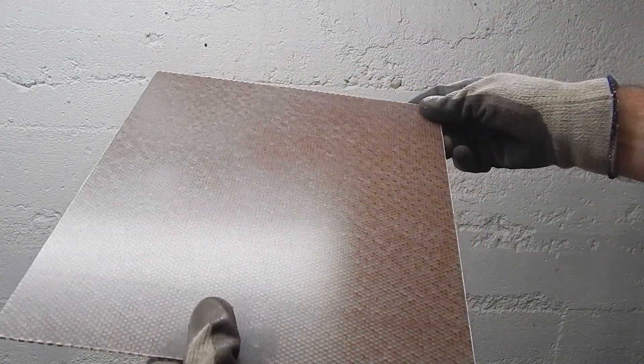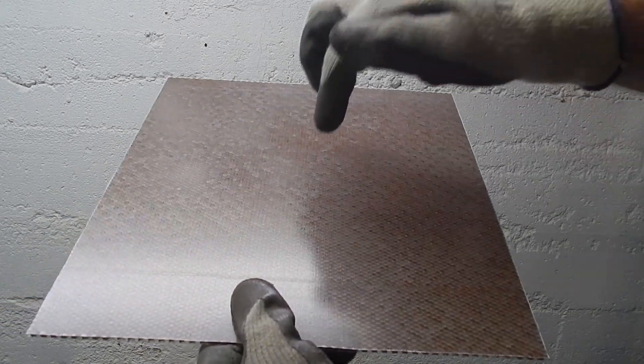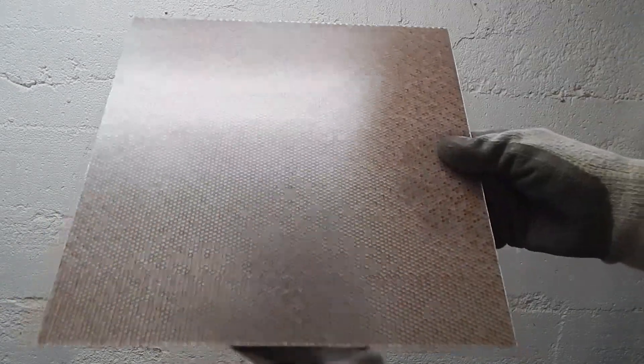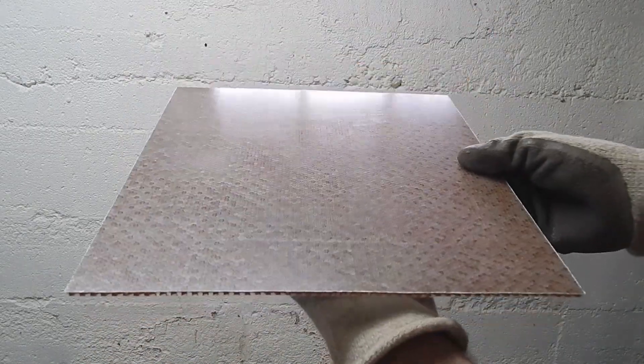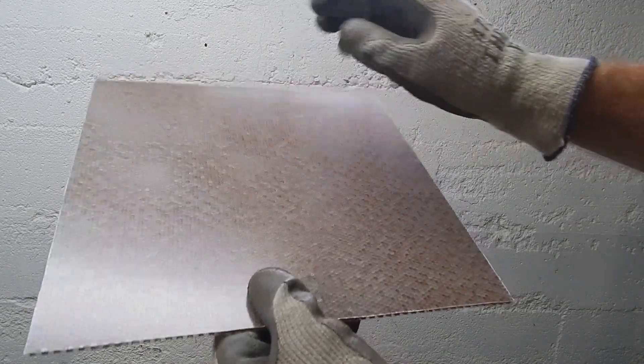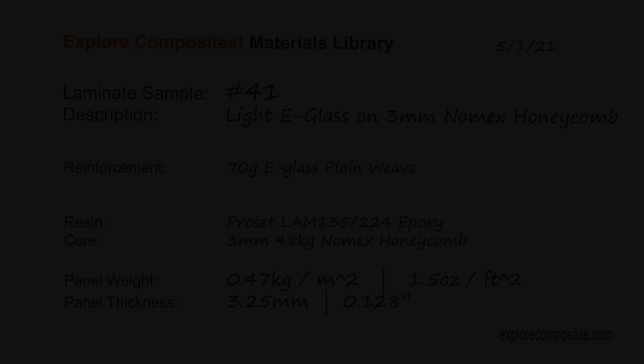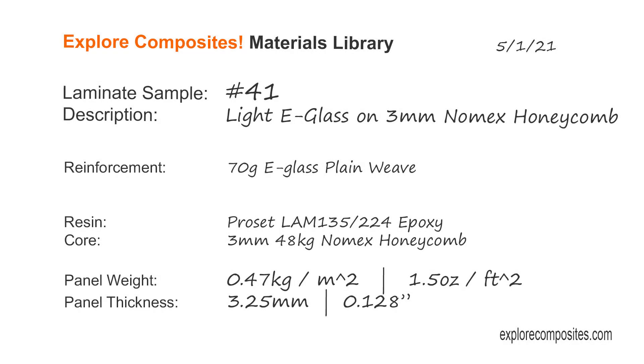I think you could do the same thing with carbon. I did it with glass here because it's cheaper, I had it, and it's a lot easier to see the process with glass. It's a neat look at how to make really light panel without prepreg or ovens or anything all that complicated. Thanks for checking it out. Have a look at some of the other laminate samples. And also check out explorecomposites.com for a whole bunch more practical how-to composites knowledge.